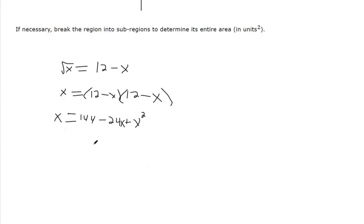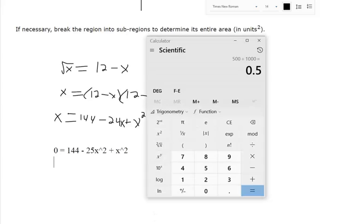Subtract x from both sides, so you've got 144 minus 25x plus x squared equals 0. When we solve this, we'd like to try to solve it by factoring. So two numbers that multiply to be 144, but add to be negative 25.